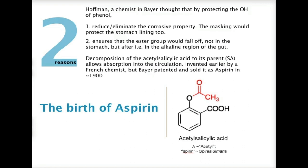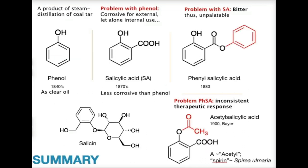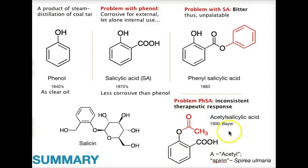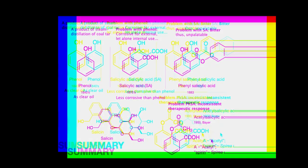The name 'aspirin' originates as follows: the 'A' comes from acetyl, and 'spirin' originates from Spirea ulmaria, the plant source. So to summarize, the discovery of aspirin came from phenol, which led to salicylic acid, then modification of the carboxyl acid gave phenyl salicylate — which worked but was therapeutically inconsistent — and finally Hoffman's acetylation of the OH group gave birth to acetylsalicylic acid, or aspirin.